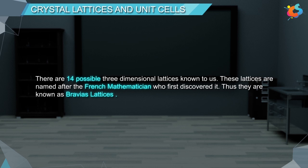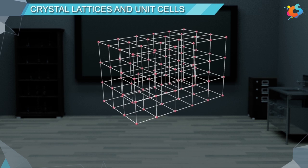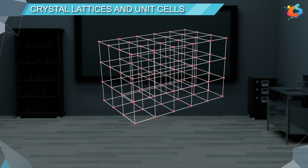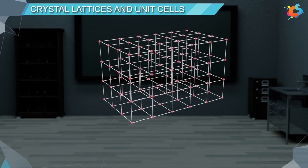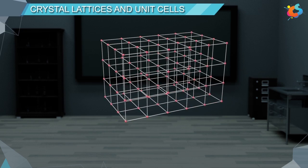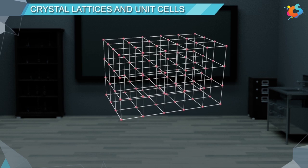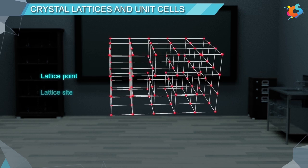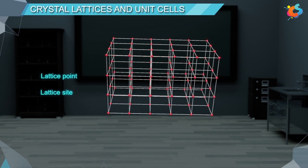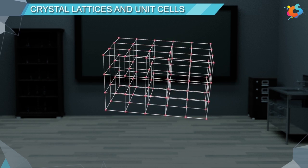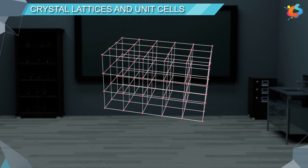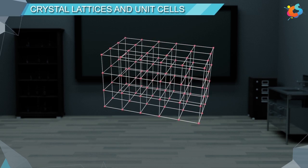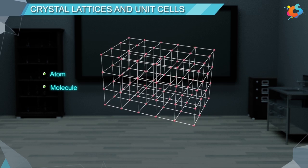Now we know what a crystal lattice is. Let us study some of its characteristics. First, each point in a crystal lattice is called a lattice point or lattice site. Second, each point in a crystal lattice represents one constituent particle which may be an atom, a molecule, or an ion.